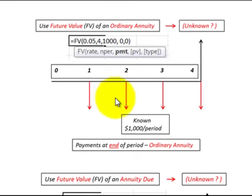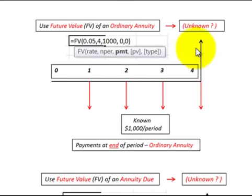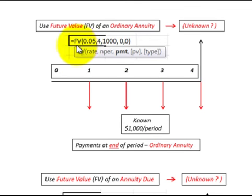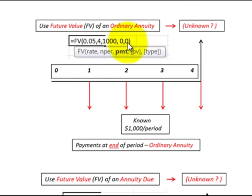Here we have four equal payments and we receive them at the end of each period — in this case, the end of each year. And then we're solving for their future value, what they'd be worth at the end of the fourth period or the fourth year. We would call this the future value of an ordinary annuity, because we're receiving these payments at the end of each period. Using the future value function, put in your interest rate, number of periods, and then the payment. It calls for a present value, but we'd put in 0 since we're solving for the future value. For the type, you'd put 0, which refers to payments at the end of each period.